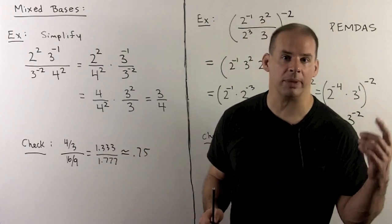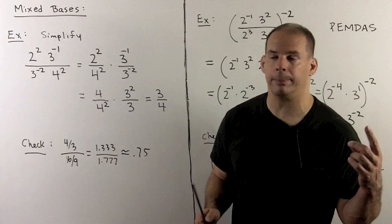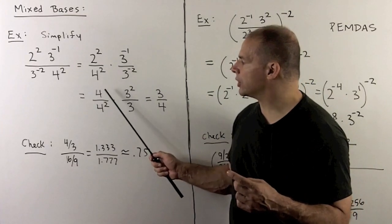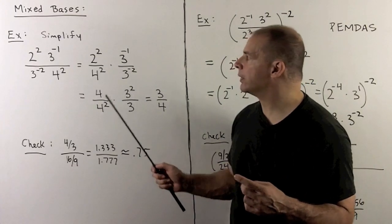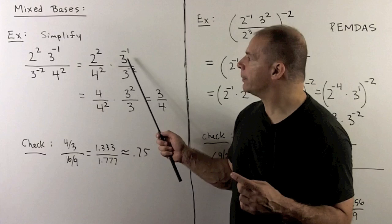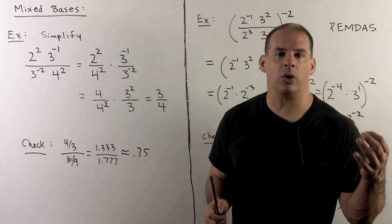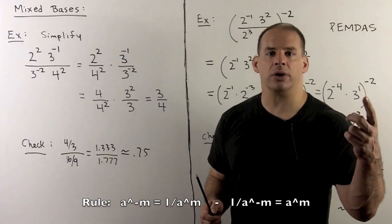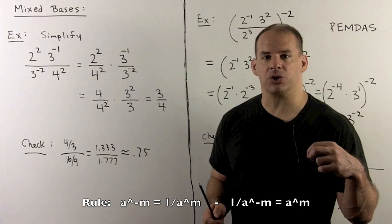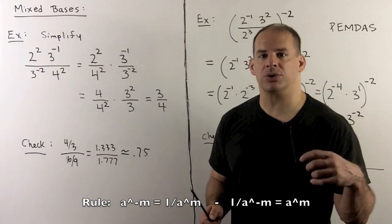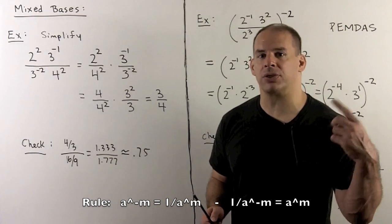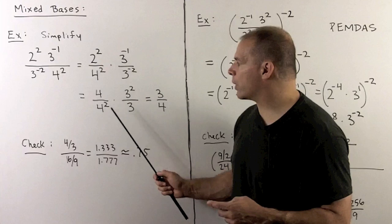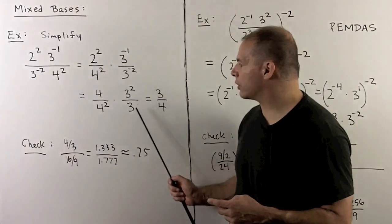Now we just apply our rules from the last part. Two squared is equal to four, so we have four over four squared. Here we have three to the minus one over three to the minus two. So three to the minus one goes to the denominator as a three, and three to the minus two goes to the numerator as three squared. So we have four over four squared, times three squared over three.